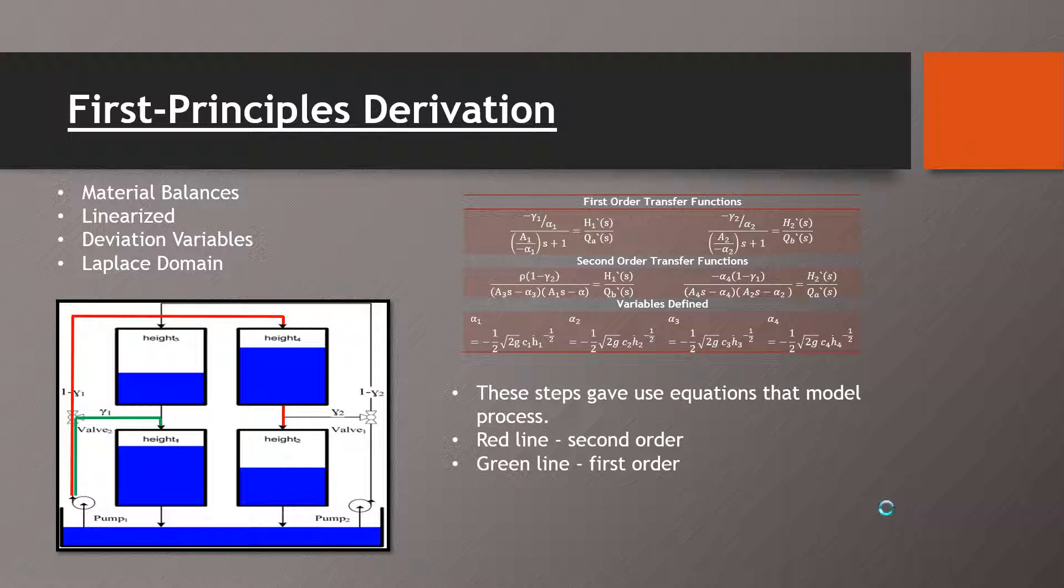The red line signifies the process for a second order and the green line shows the process for a first order.